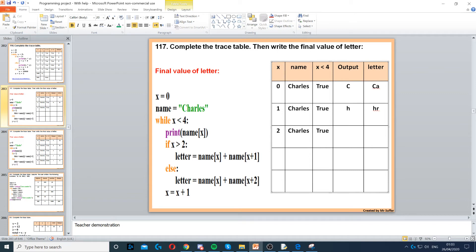Now print name X, so position 2 is the letter A. And if X is greater than 2, is 2 greater than 2? No, that's false. So we go to the else again, so name X, which is A, plus name X plus 2, which is L. So A L. Then X increases to 3.